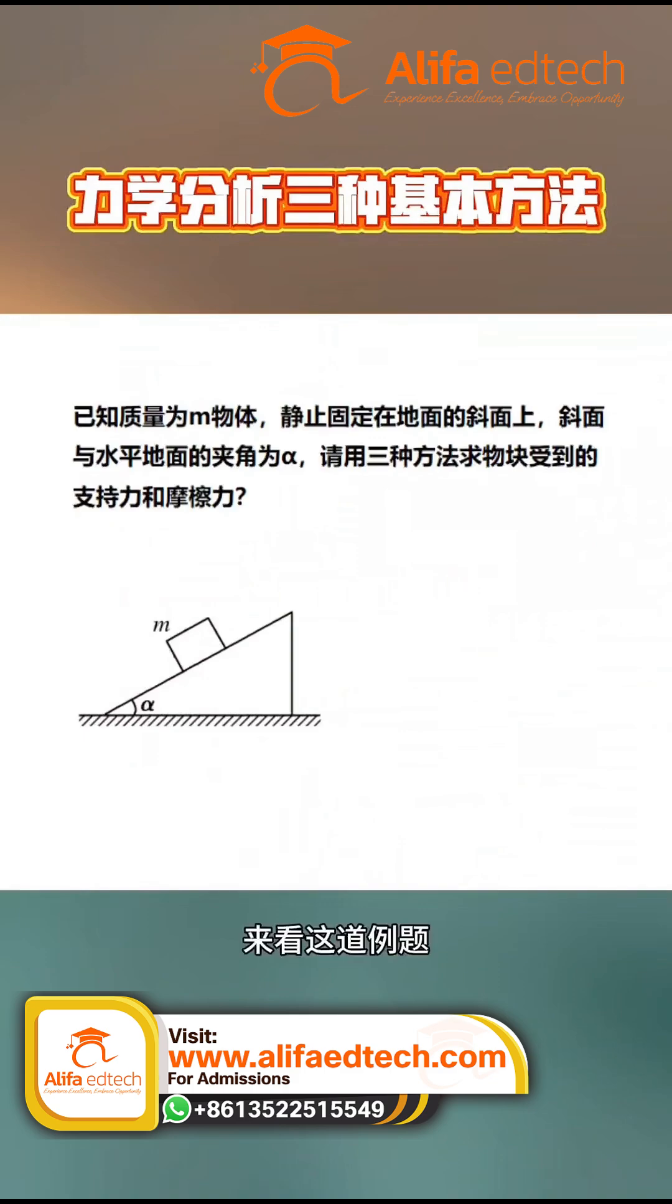Let's look at this example problem. Given an object of mass m, at rest on an inclined plane fixed to the ground, the angle between the plane and the horizontal is alpha. Find the support force and the friction force acting on the small block.